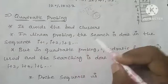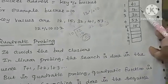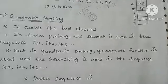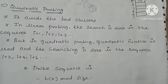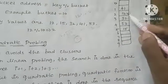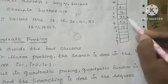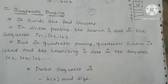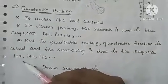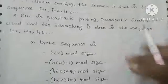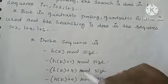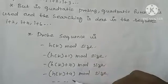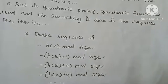Quadratic probing avoids bad clustering. In linear probing, consecutive positions fill up creating clusters. To avoid this, quadratic probing uses a quadratic function. Searching is done in the sequence i+1, i+4, i+9 — that is, i+2², i+3², and so on. The probe sequence is: h(k) mod size, h(k)+1, h(k)+4, h(k)+9, meaning 1², 2², 3², 4², 5² and so on.